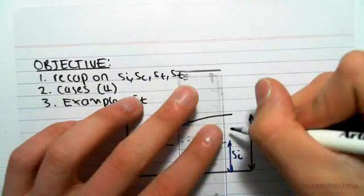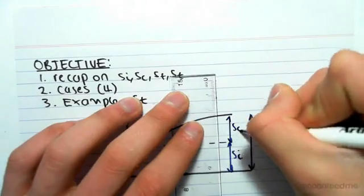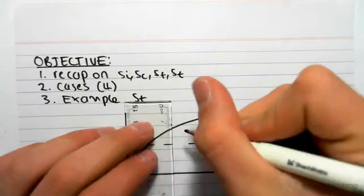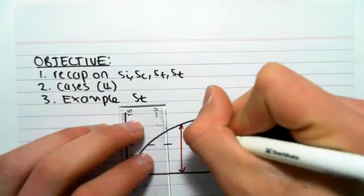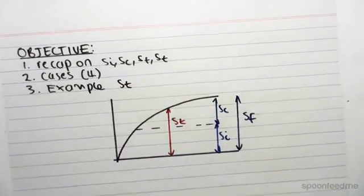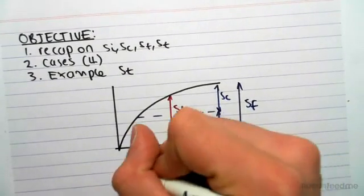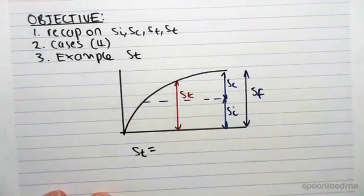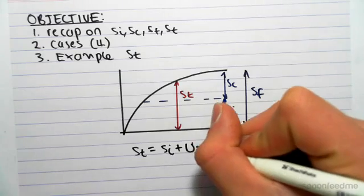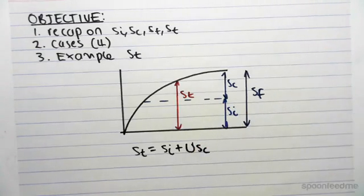We also can call this S subscript C, which is the consolidation settlement, which means that the settlement at any time, so say the settlement at this time, we'll call it S subscript T. And we said that S subscript T, so the settlement at any time, is equal to the initial settlement plus U, the degree of consolidation, times by the consolidation settlement.